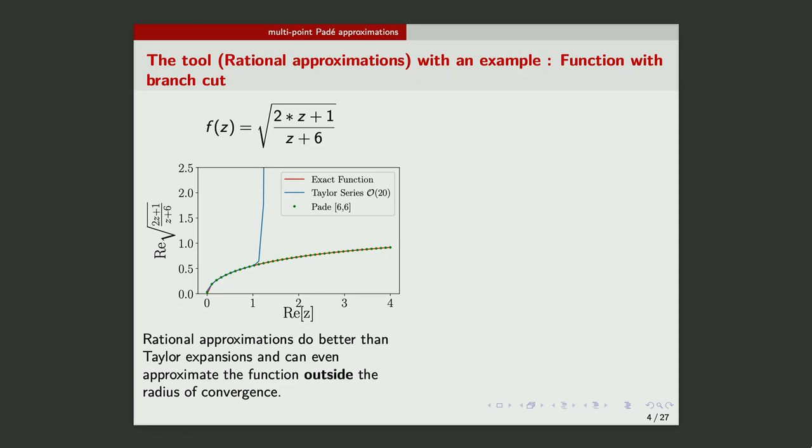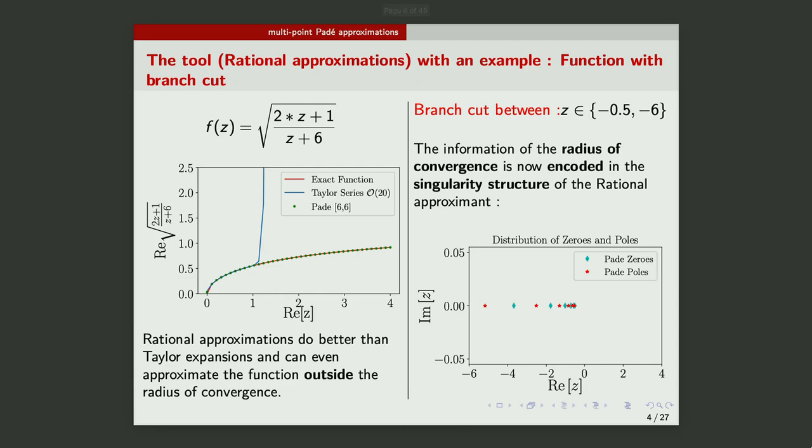This function has a branch cut between minus half and minus six. So it's on the negative z-axis. Now, I just look at the greater than zero z-axis, where there is no singularity, and you can see, even if you, it doesn't matter how large coefficients you use for the Taylor series, they will not give a faithful representation of the functions because of the radius of convergence, which is defined by this guy. Whereas, the rational function gives you a very nice representation of the function. But now you will ask, where is the information about the radius of convergence?